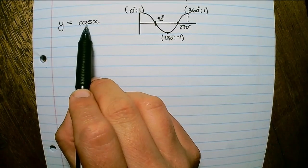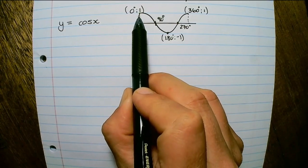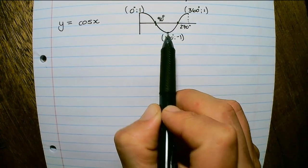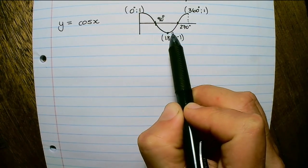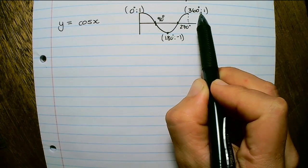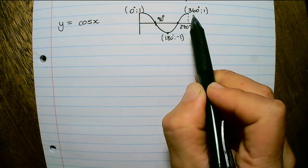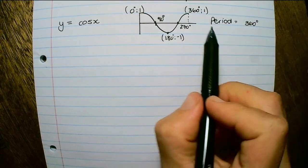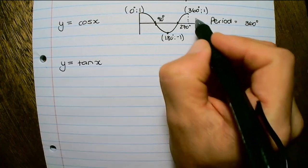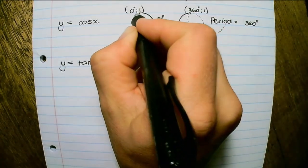In our second graph, we have y equals to cos x. It starts at 0 degrees with a maximum of 1, moves to 0 at 90 degrees, then its minimum value is at 180 degrees and negative 1, then back to 0 and ends at 360 degrees with a maximum value of 1. Cos also has a cycle of 360 degrees, so the period of the cos graph is 360 degrees. This cycle can also continue indefinitely to the right and to the left.